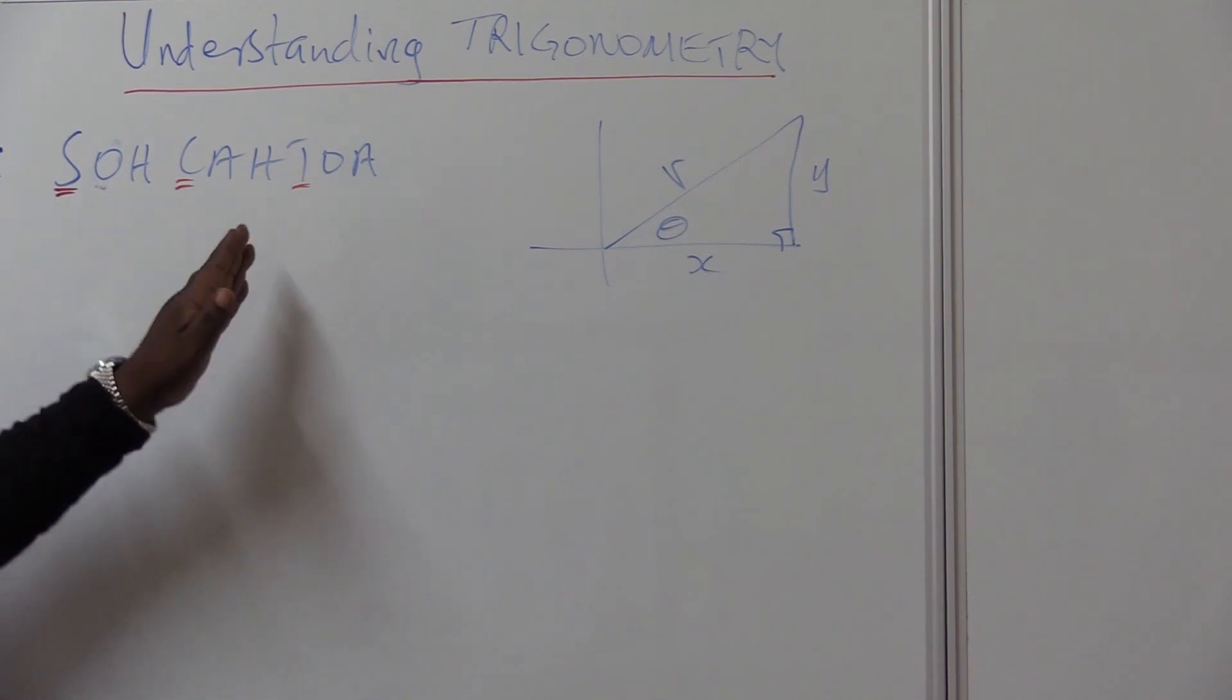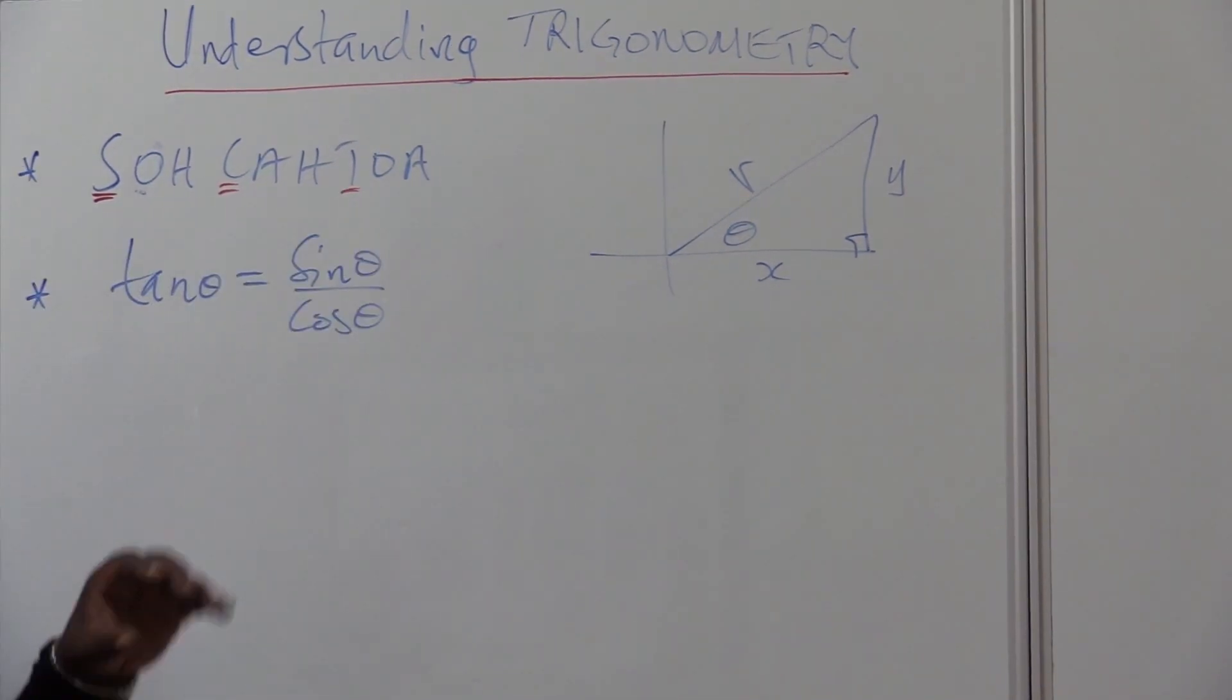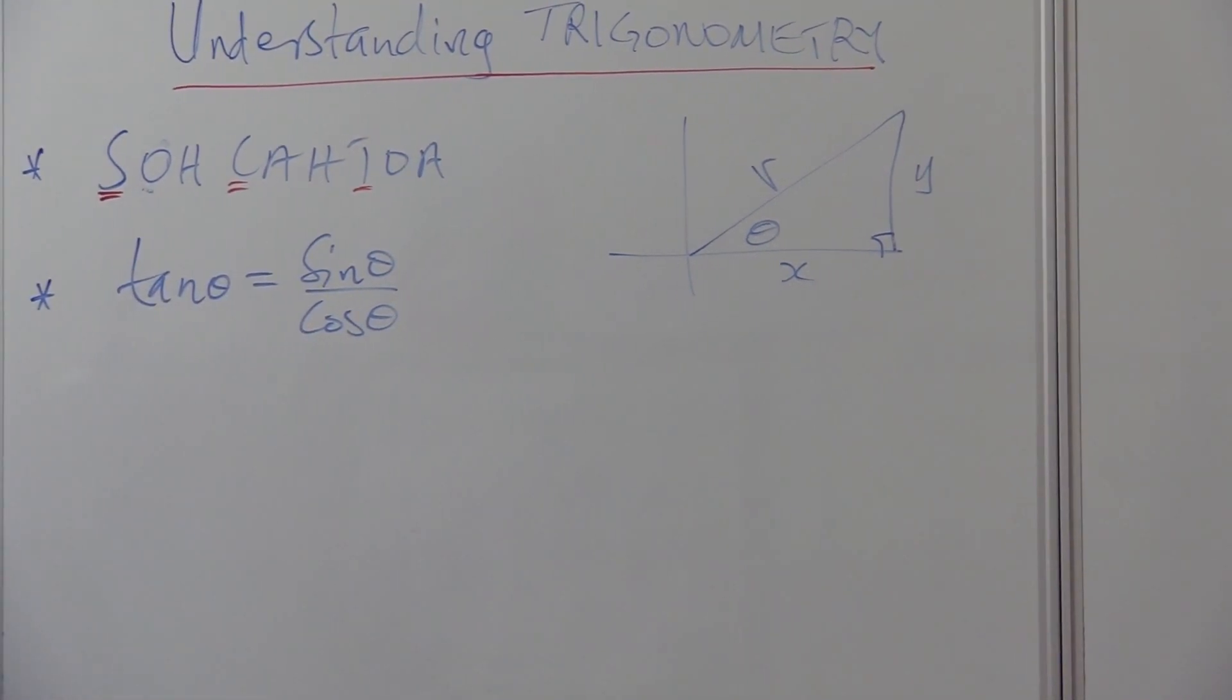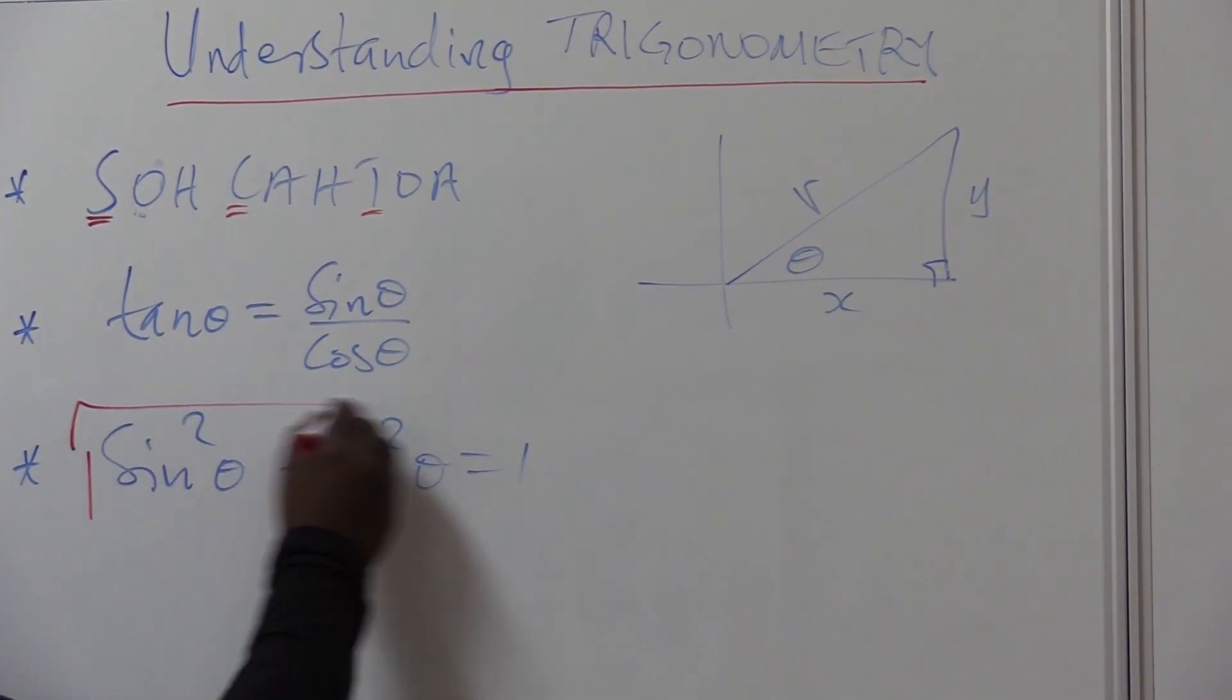Sin is opposite over hypotenuse, cos is adjacent over hypotenuse, tan is opposite over adjacent. Whenever you see tan, change it into sin and cos. It is advisable that you work with sin and cos. This identity is also very important that you must understand them as well.